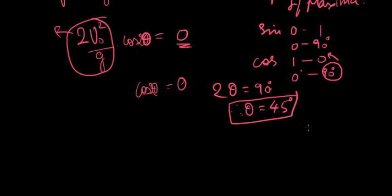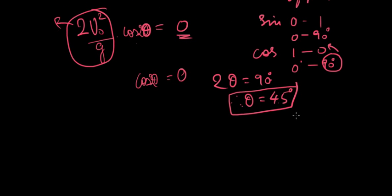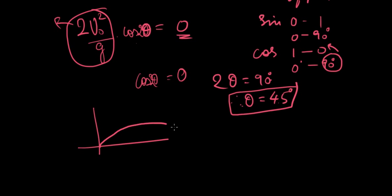So this is the way to derive the angle for maximum range using calculus. You might find these questions in exams and tests. Now we know that when you launch any projectile at an angle of 45 degrees, your missile or cannonball is going to travel the largest range. Thanks for watching. See you soon. Bye-bye.